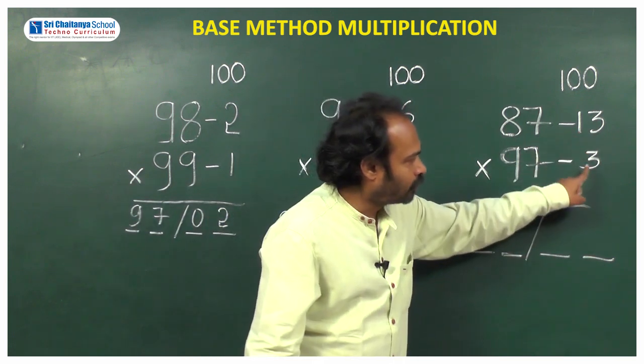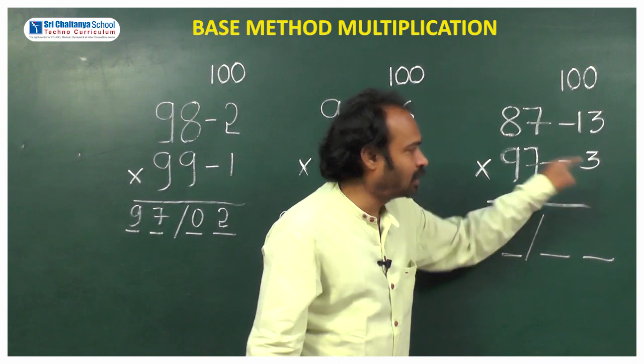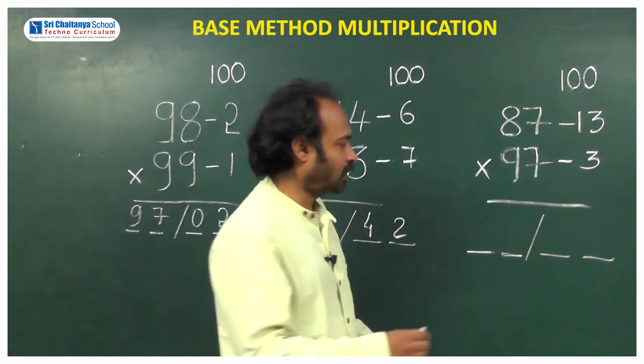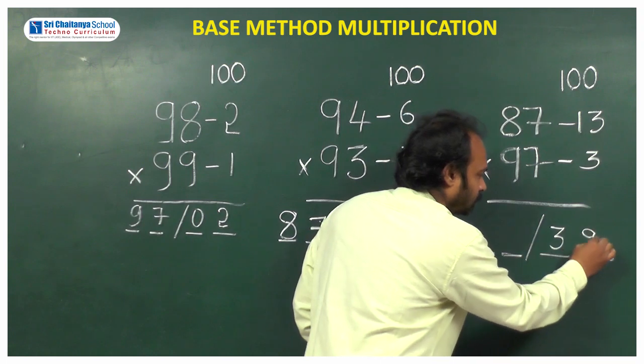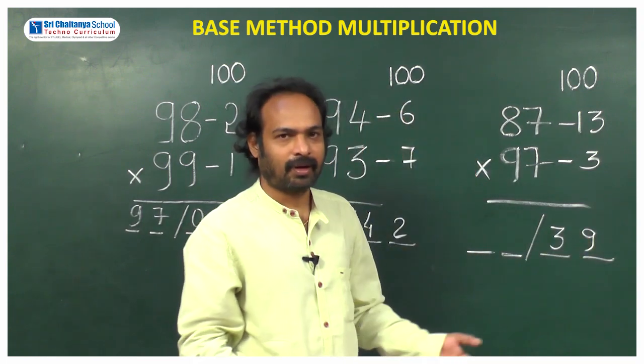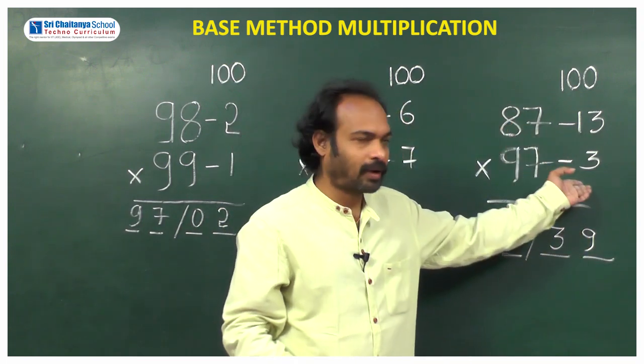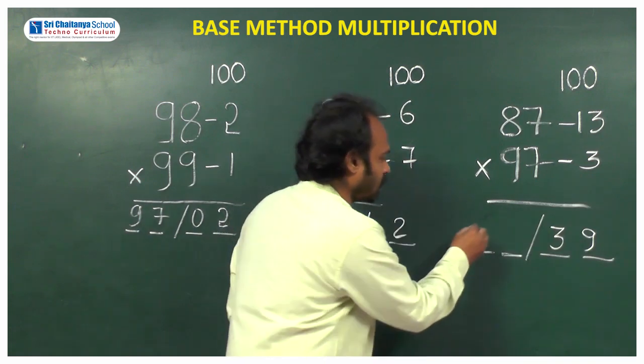Now you have to take the product of these two numbers: 13 into 3, how much? 39. Here you will write 39. What is the next step? Diagonal subtraction: 87 minus 3, which is 84.